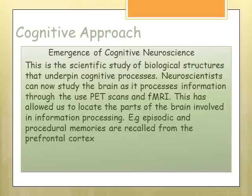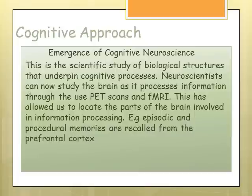The emergence of cognitive neuroscience is the scientific study of biological structures of our brain. Certain brain structures underpin cognitive processes and they are studied through brain imaging such as PET scans and fMRI scans, allowing us to locate different parts of the brain involved in different processes. For example in memory, episodic and procedural memories are recalled from the prefrontal cortex, whereas semantic memories are recalled from the basal ganglia. In OCD, abnormalities within the basal ganglia meant people were more likely to suffer from OCD.